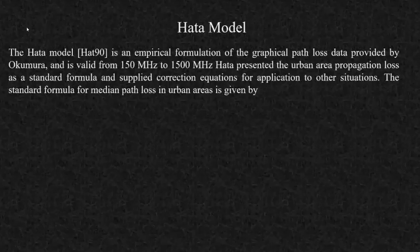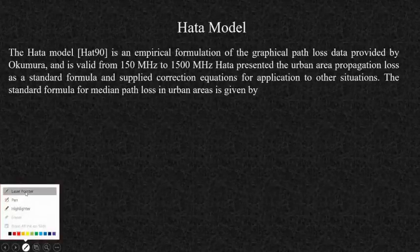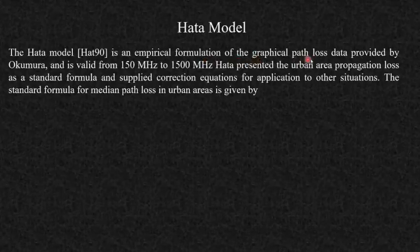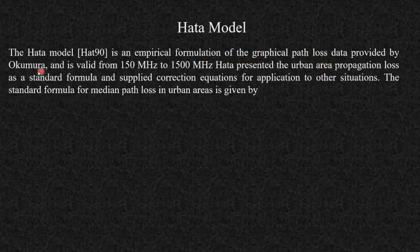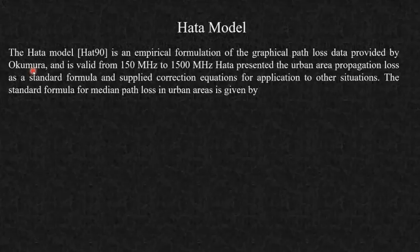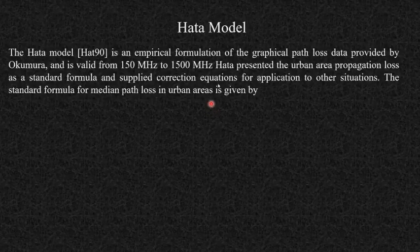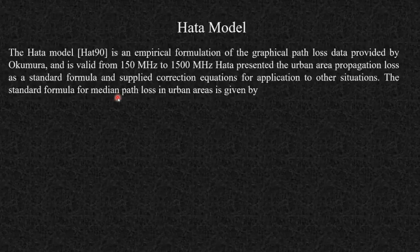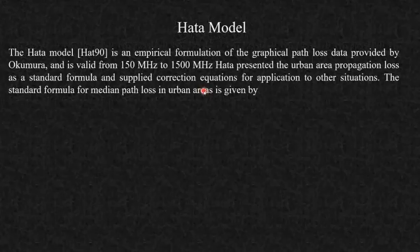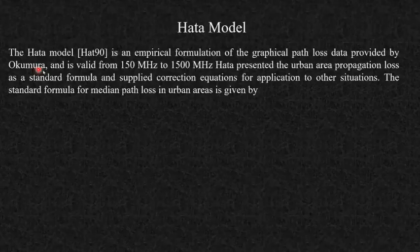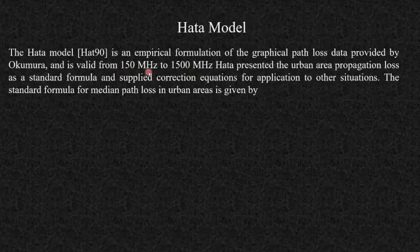Hata model and receiver noise computation. The Hata model is an empirical formulation of the graphical path loss data provided by the Okumura model. It does not have any derivation, but based on several practical experiments, scientists concluded this represents the path loss for large-scale propagation. This model is valid from 150 MHz to 1500 MHz.